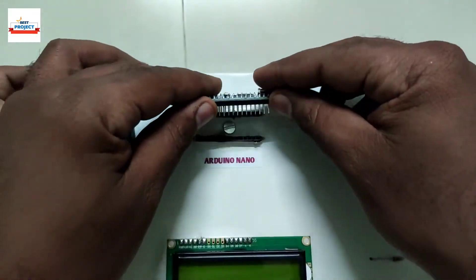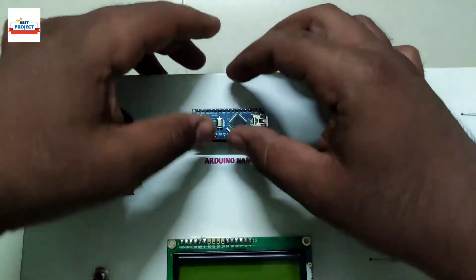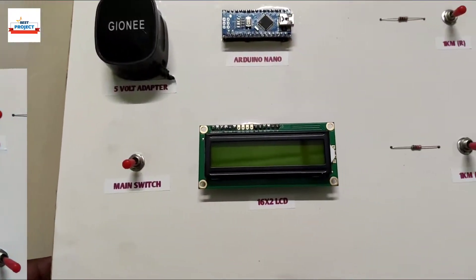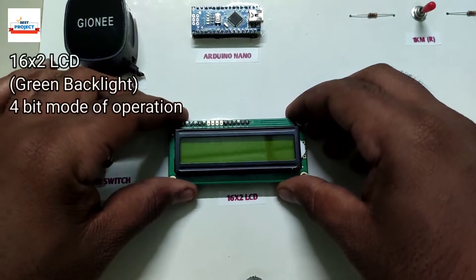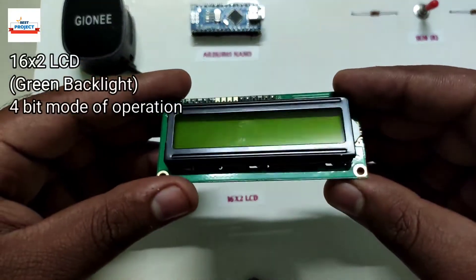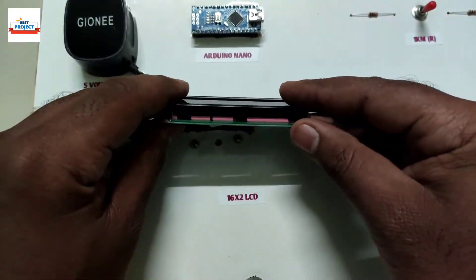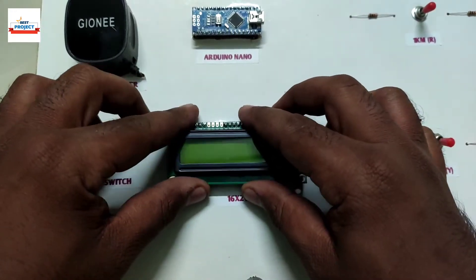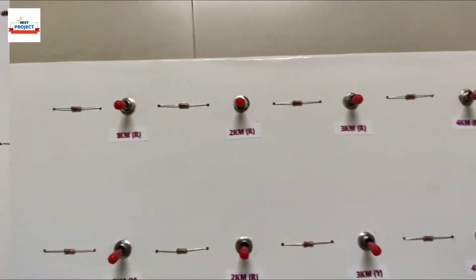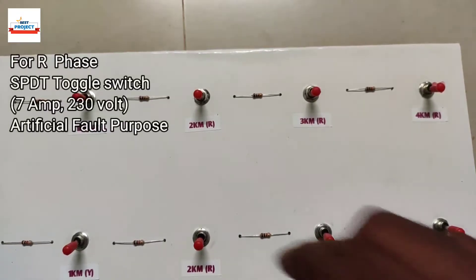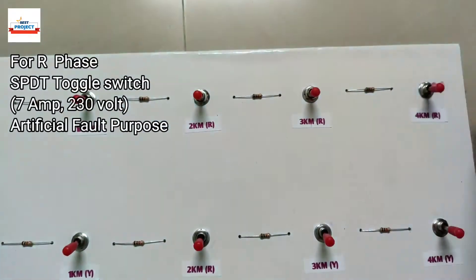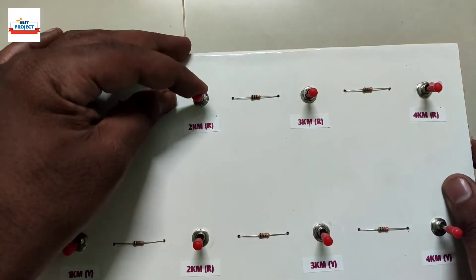We are using 16 by 2 LCD to see the fault location and name of line. It is removable for study purpose. This line has the artificial fault switches for R phase. These four switches create underground fault at one kilometer distance each.